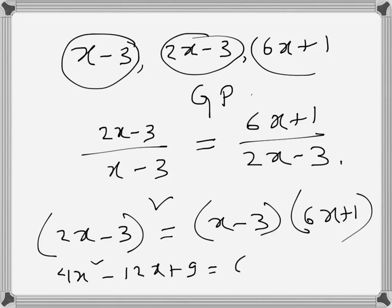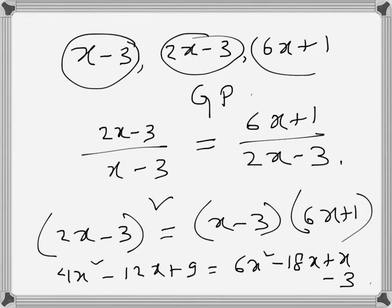9, and this is 6x square minus 18x plus x minus 3. So if I rearrange, I'm taking everything on the right hand side. It's 2x square - this 4x square goes on the right hand side - and then this